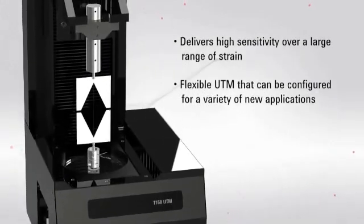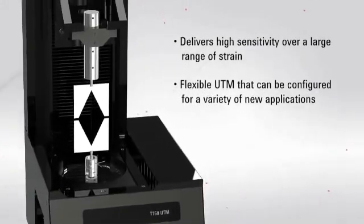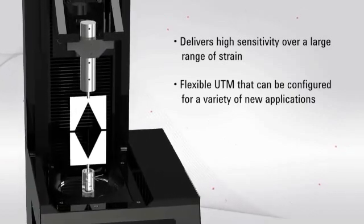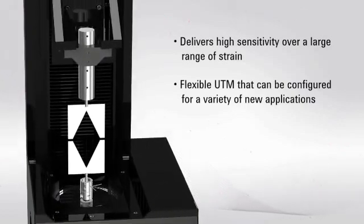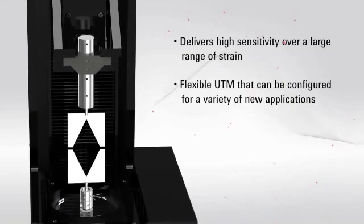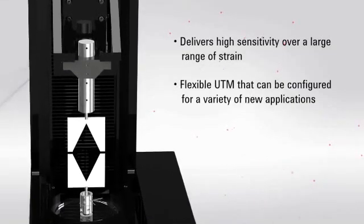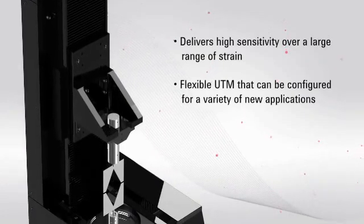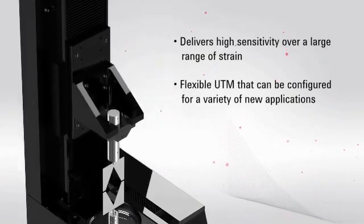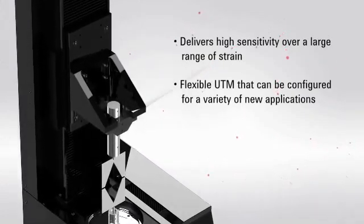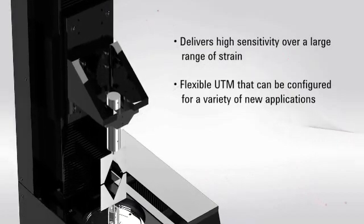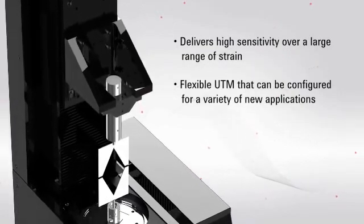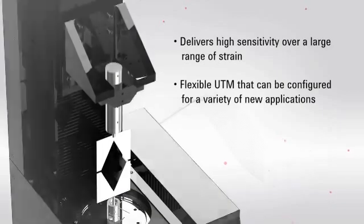The Keysight T150 UTM has the sensitivity required to test even the most compliant of materials. Spider silk, for example, is a material of increasing interest in many fields due to its light weight and high tensile strength. While most larger tensile testing systems do not have enough sensitivity to test spider silk, the Keysight T150 is well-suited for testing this compliant material, in addition to many more.